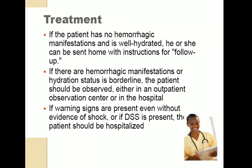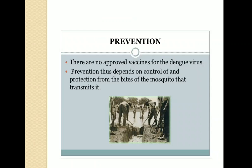Regarding treatment: if a patient has no hemorrhagic manifestations and is well hydrated, they can be sent home with instructions for follow-up. If there are hemorrhagic manifestations or hydration status is borderline, the patient should be observed either in an outpatient observation center or in hospital. If the warning signs are present even without evidence of shock, or if DSS is present, the patient should be hospitalized.